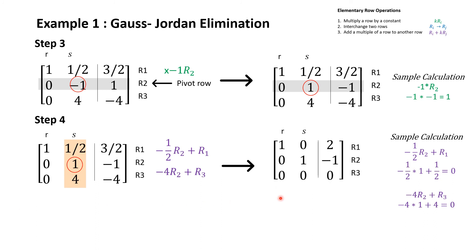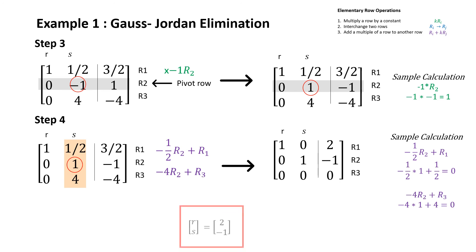Here we can see that this matrix is in reduced row echelon form because the leading entry in each non-zero row is a one, and all elements above and below the leading entries are zero. Therefore, this matrix leads to the solution to the system of linear equations, where r is equal to two and s is equal to negative one.